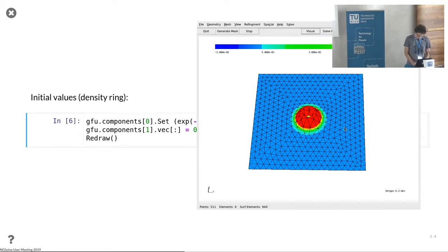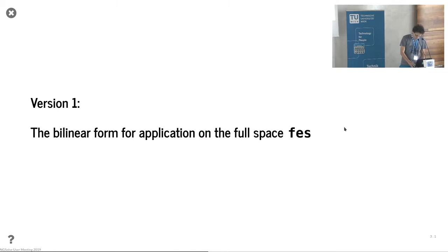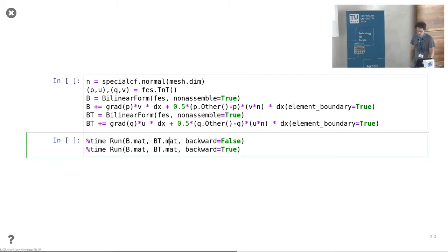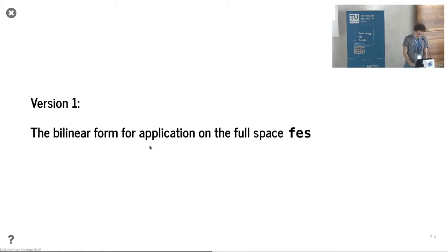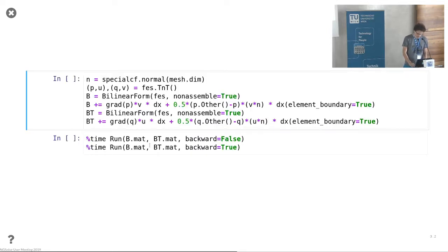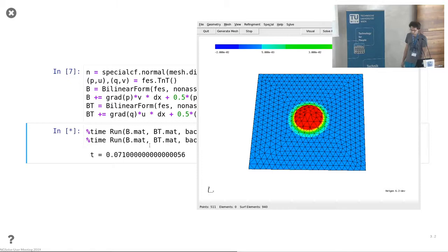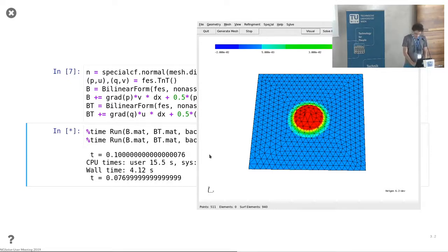The first simple version you could do is just write down what we know already very well: write down the bilinear form, set non-assemble true, and just call the run function with B mat and B transpose mat. First we solve the problem forward in time and then the same amount backward.